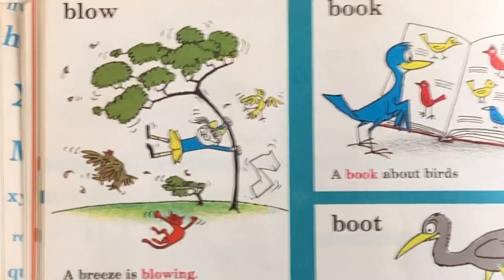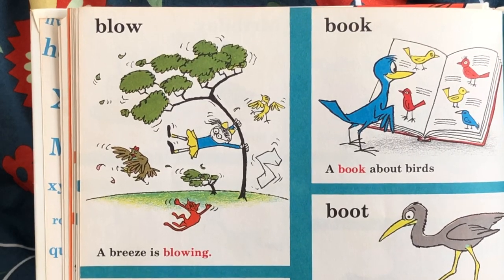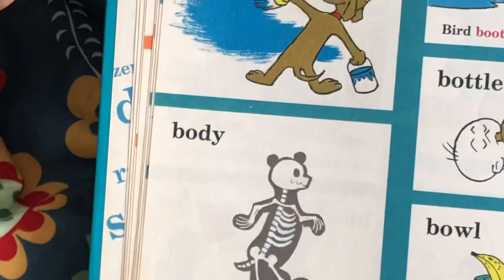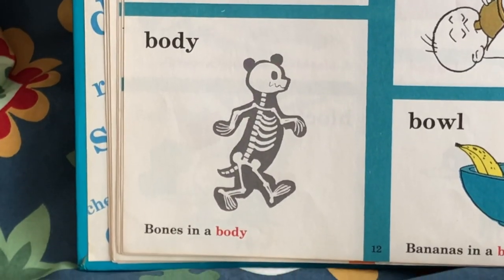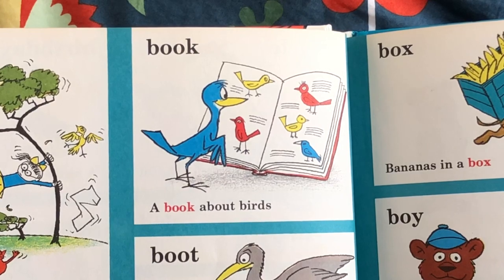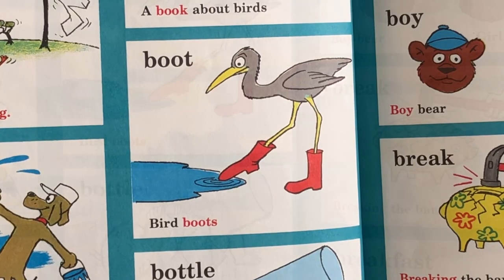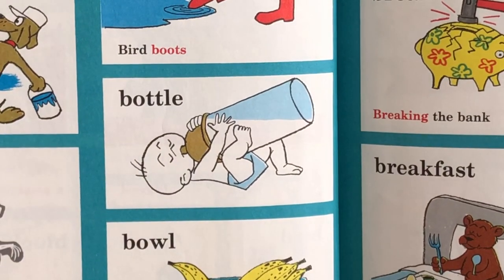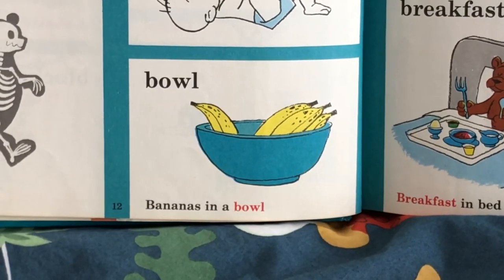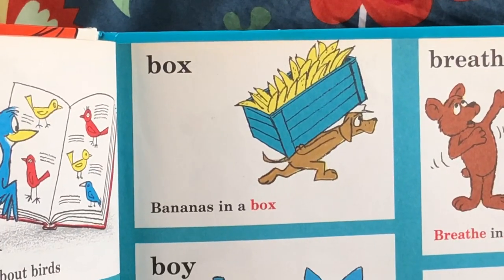The letter B. Blow — a breeze is blowing. Blue. Body — bones in a body. Book — a book about birds. A bird reading a book about birds. Boots. Boot — bird boots. Bottle — that's a big bottle. Bowl — bananas in a bowl. Box — bananas in a box.